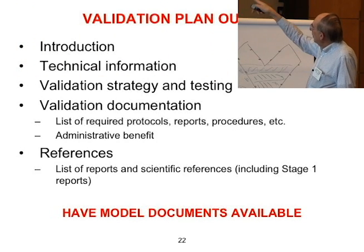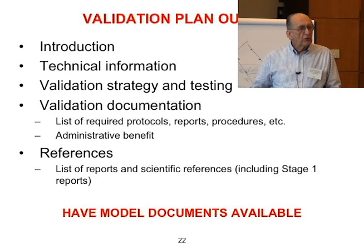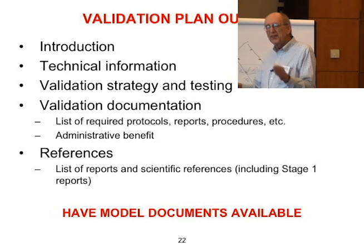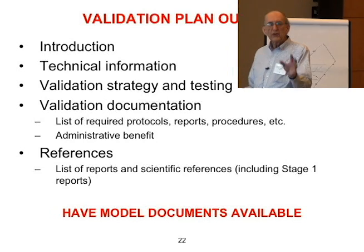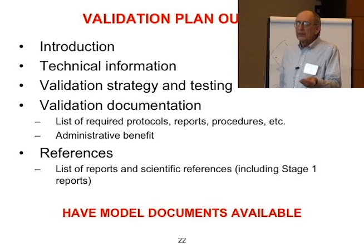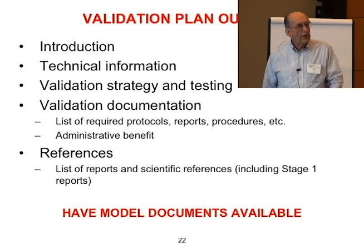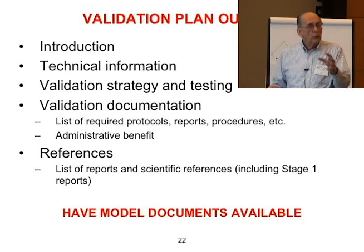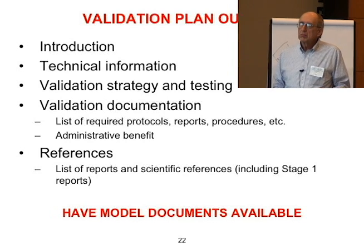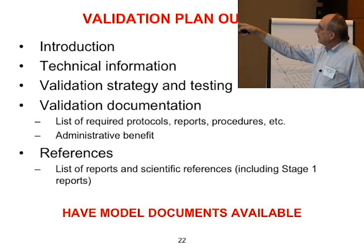The validation plan is the key document. This is where you describe what you're going to do to validate the process, qualify the equipment, or qualify the control system. This is the key document — this is where you want your writers to spend the most time. This is what the auditor is going to look at. This is where you're going to provide all your justification for your sampling, your acceptance criteria, and all that. Once this is done, the protocol will be written to agree with this, and the results will be written to agree with the protocol.